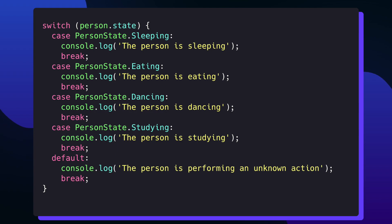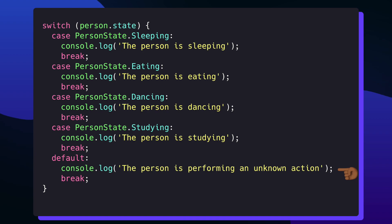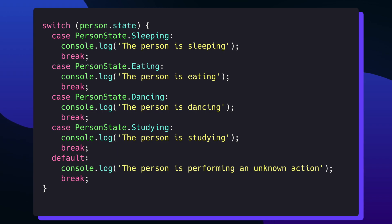Here I have my switch statement. Inside the parentheses I point to person.state, and depending on the person's state, I want to jump into the corresponding case. My person's current state is sleeping, so I'm going to jump into the sleeping case and print out that the person is sleeping. I also have other cases for eating, dancing, studying, and more. Then I have my default case where I print out that the person is performing an unknown action. Each case is only concerned with one possible state. With switch statements, there's no room to include other conditional values like extra booleans, integers, or strings.